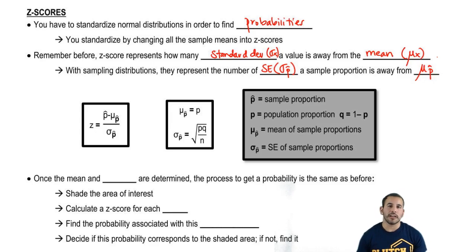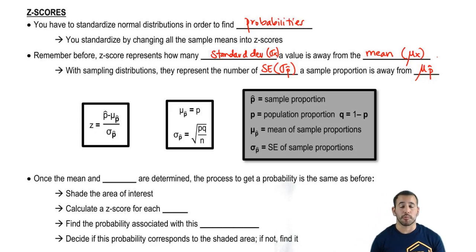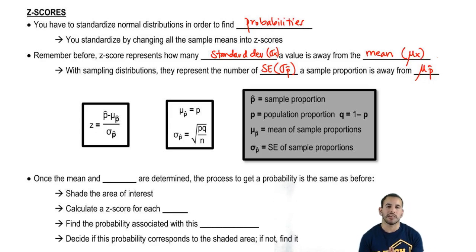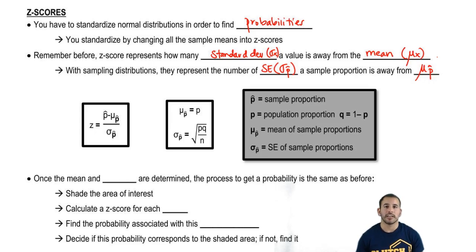Let's say we flip 20 coins. It may not always be the case that we end up with exactly 10 heads. That's our sample proportion — it's based off a sample. We have the number of successes divided by the total. On average, the proportion should be 50%, but there's some variability. If we flip quarters only five times, you may get five heads, one head, or zero heads — they're all possible, but on average you should be getting 50%.